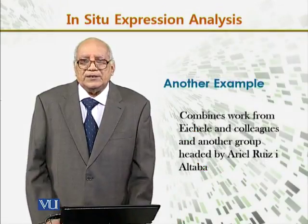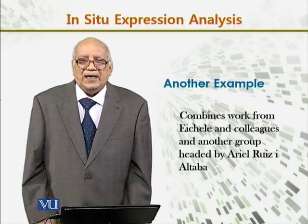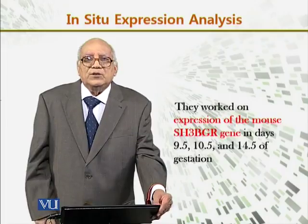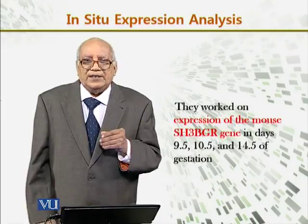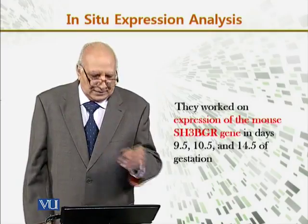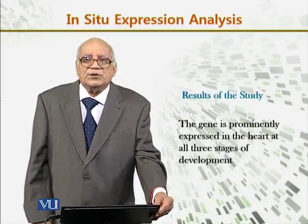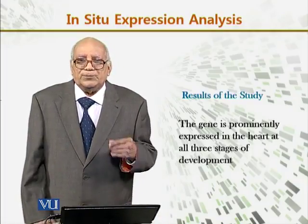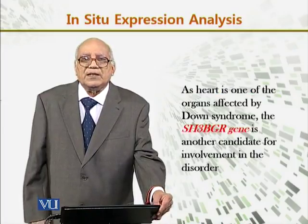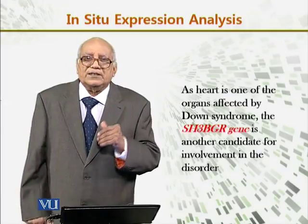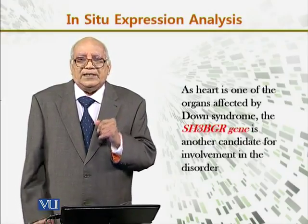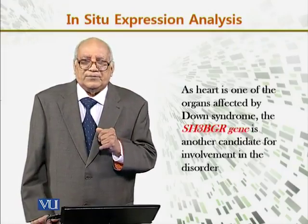Another example combines the work from Aishle and colleagues and another group headed by Ariel Ruiz I Eltaba. They worked on the expression of the mouse SI3BGR gene at days 9.5, 10.5, and 14.5 of the gestation period. They found that the gene is prominently expressed in the heart at all these stages of development. As the heart is one of the organs affected by Down syndrome, the SI3BGR gene is another candidate for involvement in this disorder.